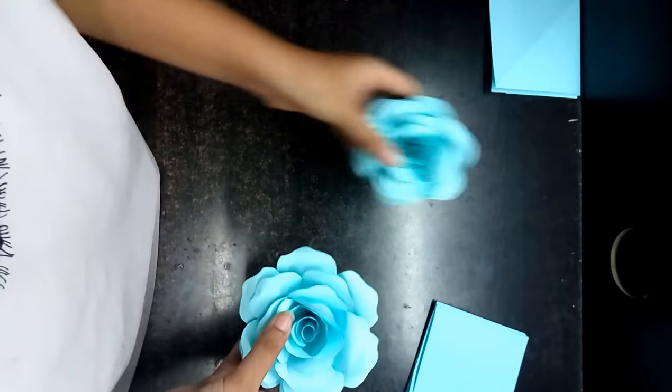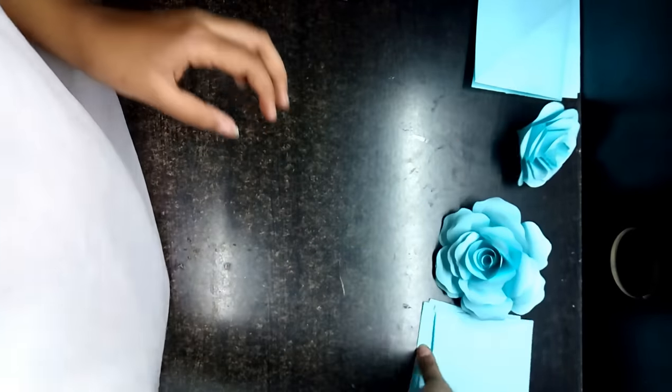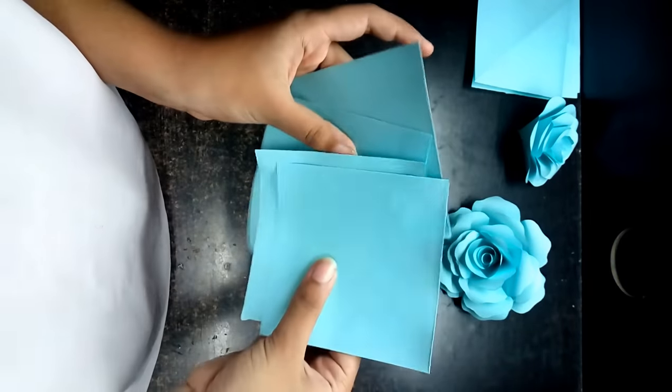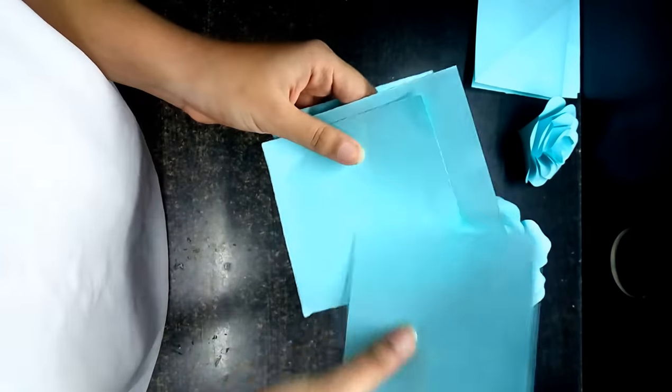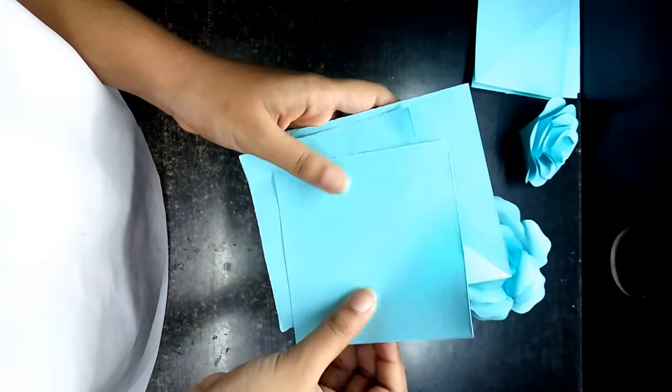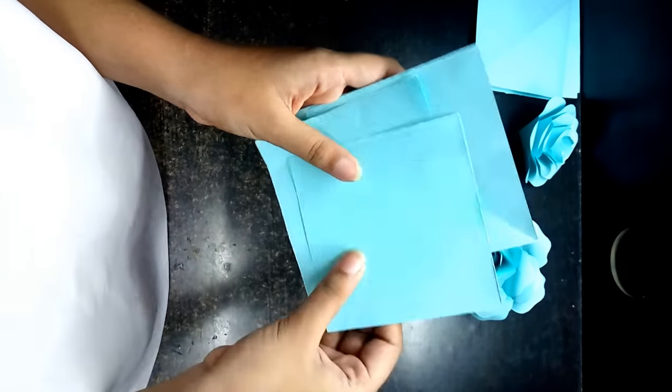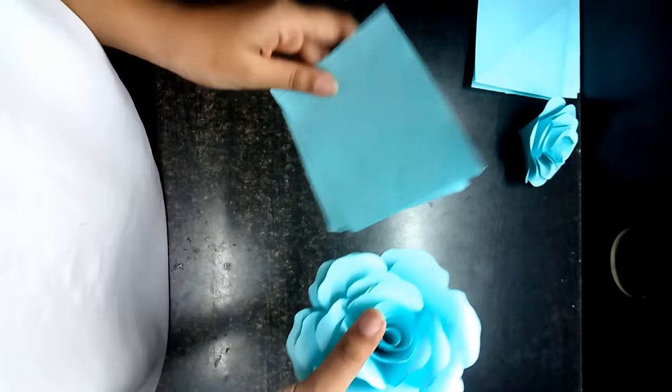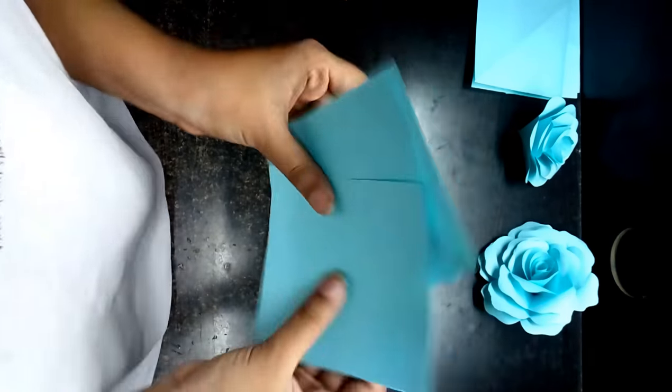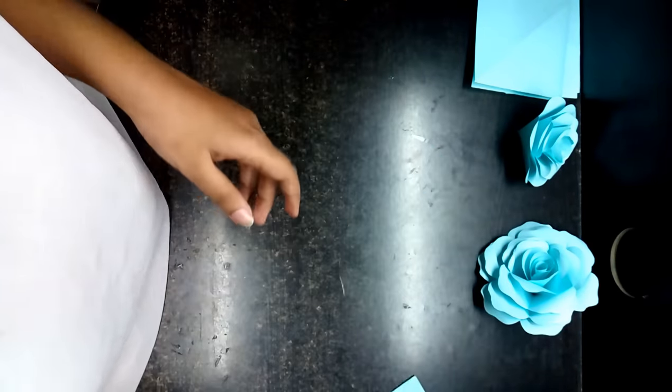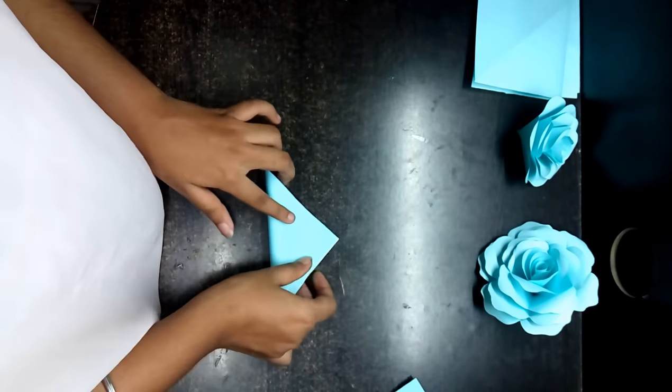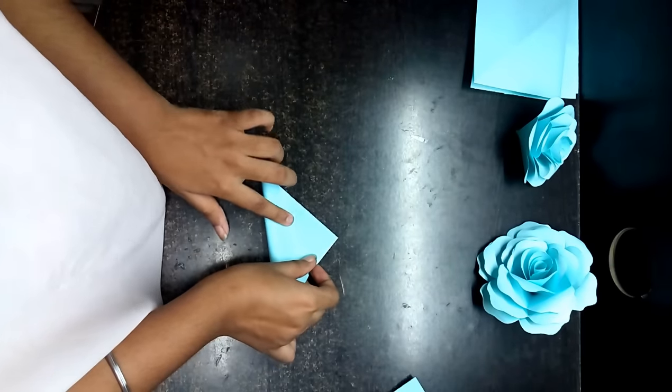So let's get started. To make these roses we're gonna need four sheets, four squares like these. It's 10.5 by 20.5 centimeters. If you want to make a bigger one, you can take bigger squares. So take a sheet, fold it diagonally like this.